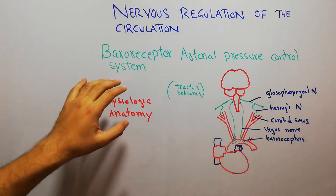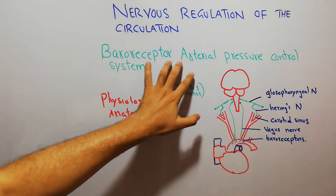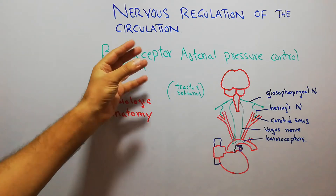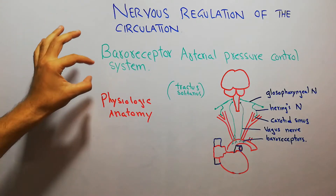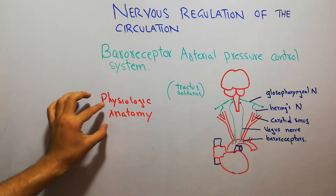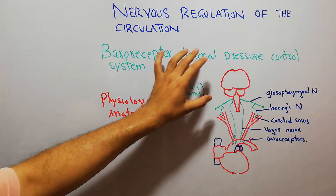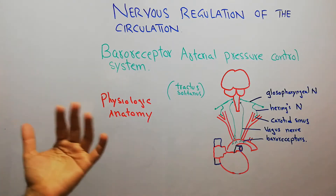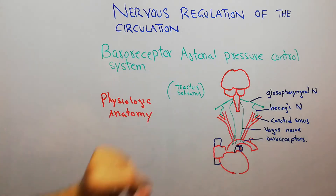Today in this lecture we are going to discuss the baroreceptor arterial pressure control system, or the baroreceptor reflexes. In this lecture we are only going to discuss the physiologic anatomy of the baroreceptor arterial pressure control system, and then in the coming lectures we will discuss the functions of the baroreceptor control system.